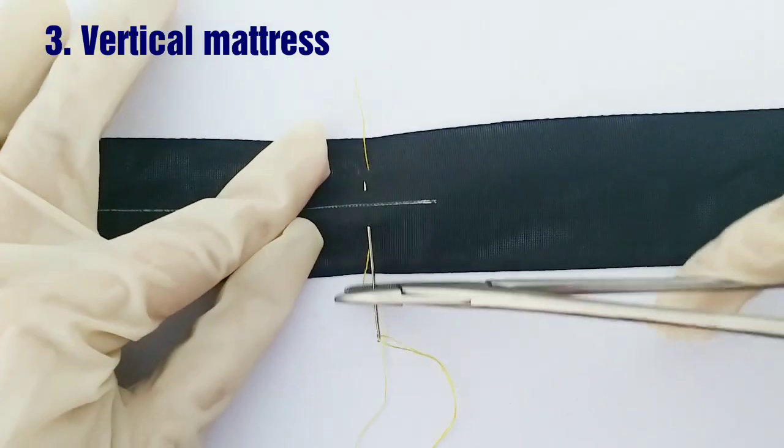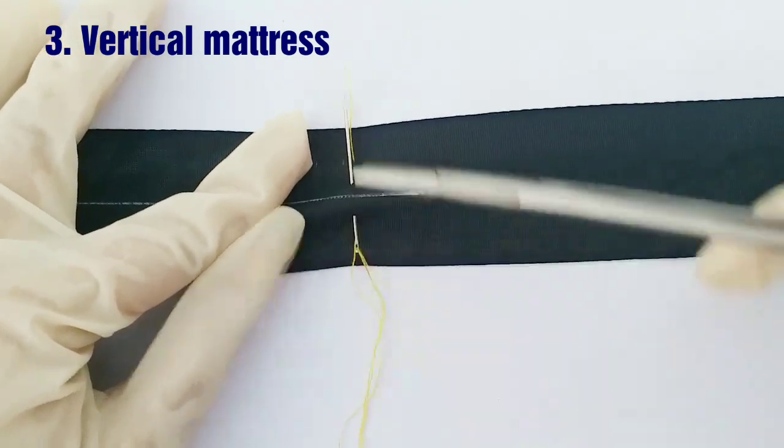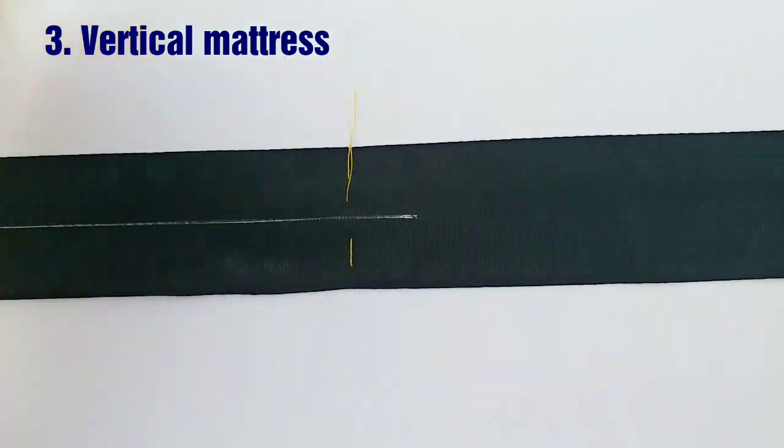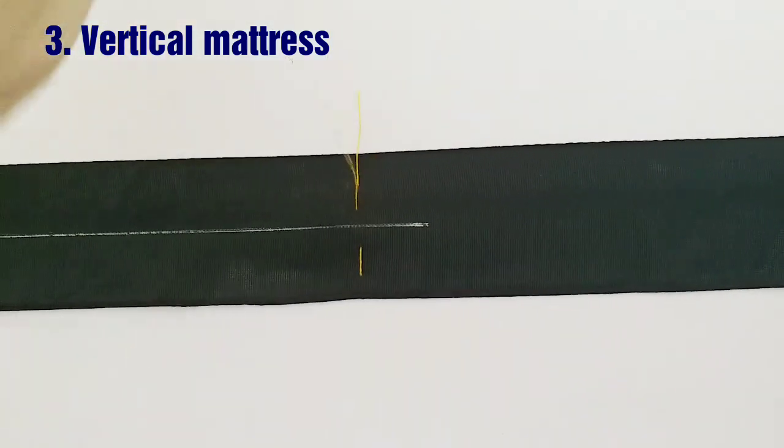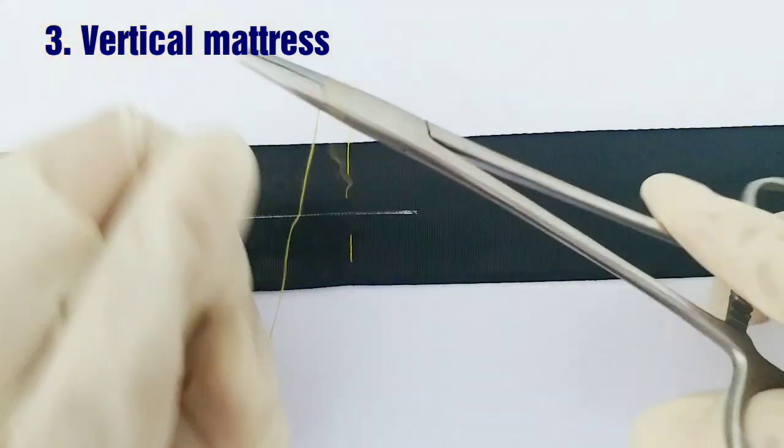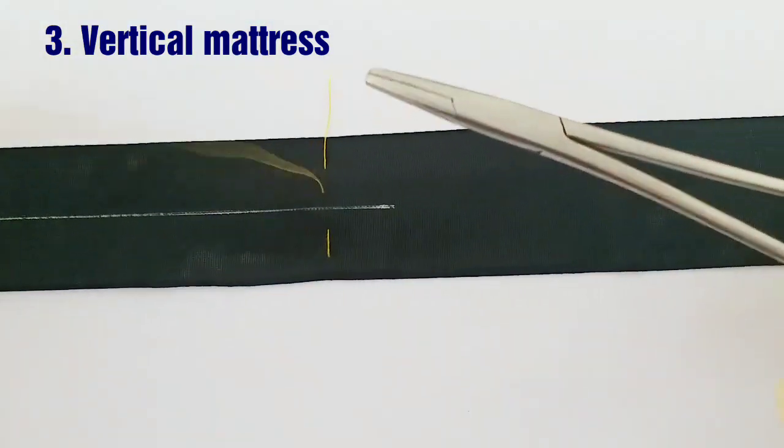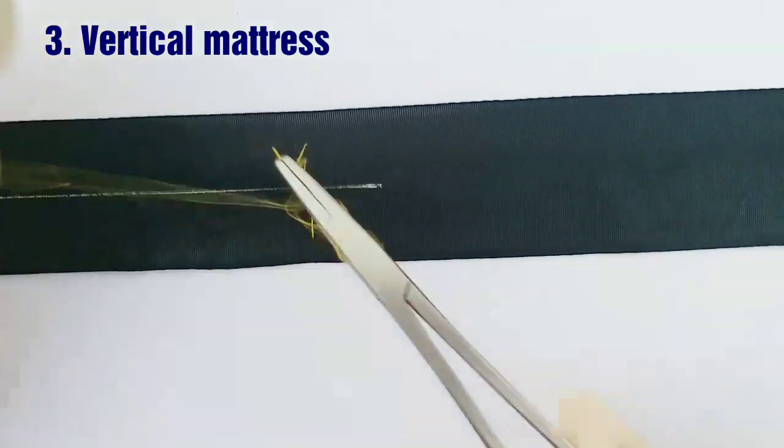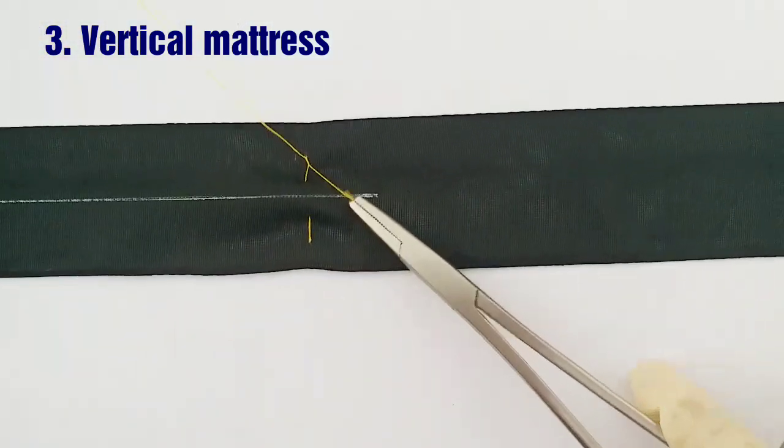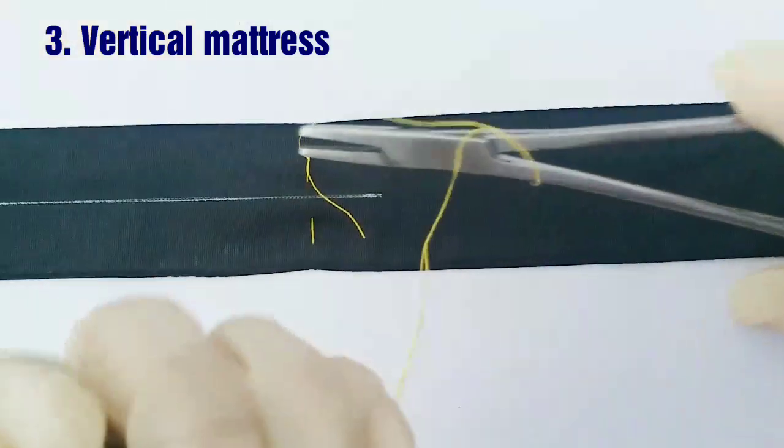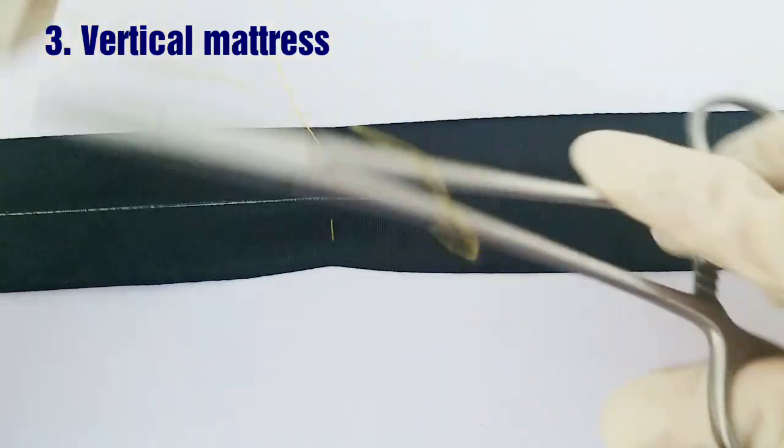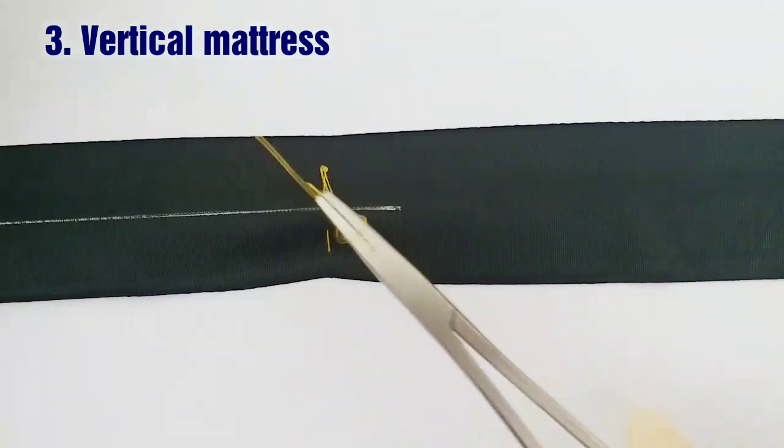Through the same line, so this way it forms a straight vertical line, and hence the name vertical mattress. Once again, going with the surgeon's knot. First, my right hand is pulled towards me, and then my right hand goes away from me, and then going with two additional throws.